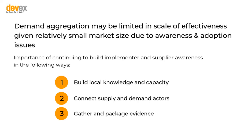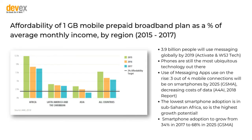The next steps are: we need to build awareness and capacity — who, what, where, and how. We need to make connections between supply and demand, because if you're coming into a new country you don't really know who the aggregators are or how to connect to their systems. Context is king — you're not necessarily sure which channels are predominantly used. And then we still need to gather more evidence: what works, what doesn't, what is the impact. I'll stop there to open it up to questions.